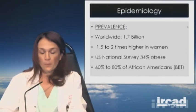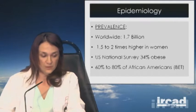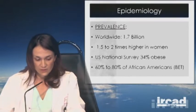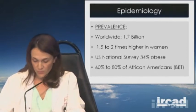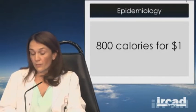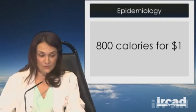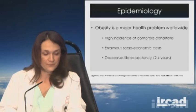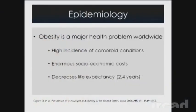Worldwide, we have 1.7 billion obese people. Women are 1.5 to 2 times more obese than men. About 30% of the population in the United States is obese, and about 60 to 80% of African-Americans are obese. One reason: you can get 800 calories for less than $1 at fast food chains, so if your socioeconomic status is not good, that's where you'll find food. Obesity is a major health problem worldwide because of the high incidence of comorbid conditions and the socioeconomic cost. Obese people cost more to health insurance, and their life expectancy is decreased by 2.4 years.